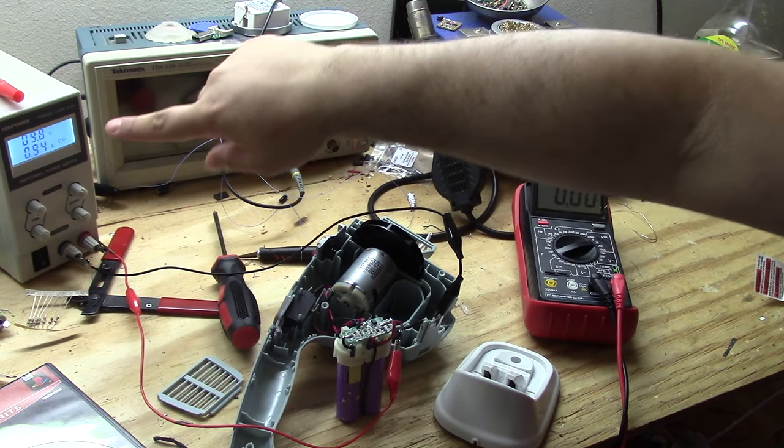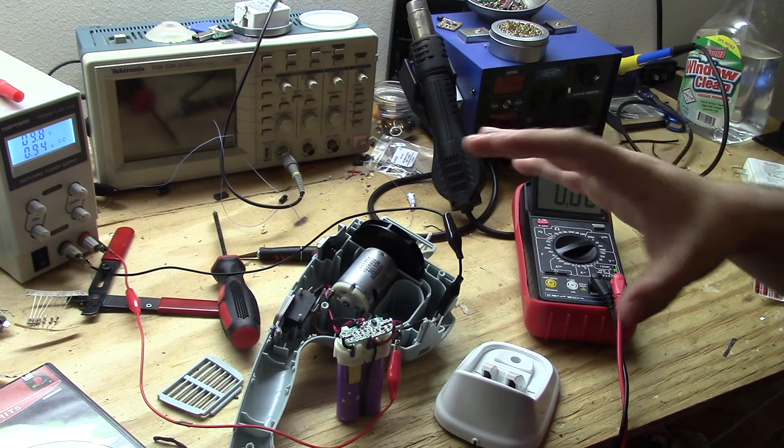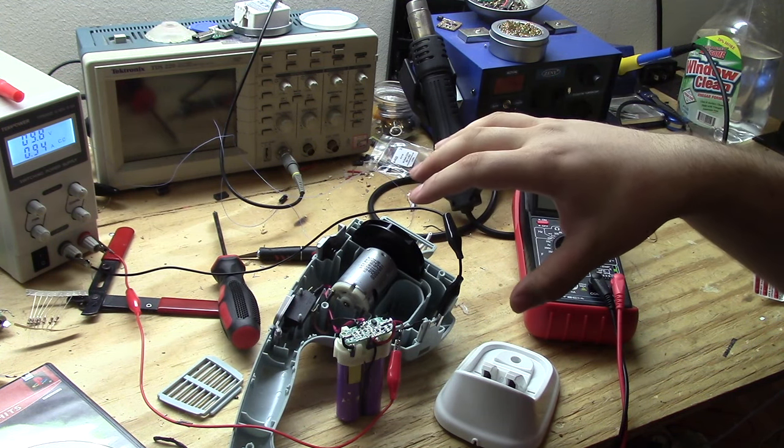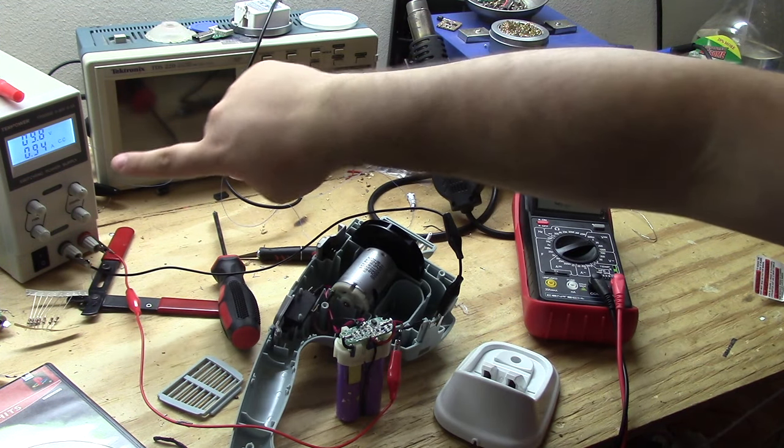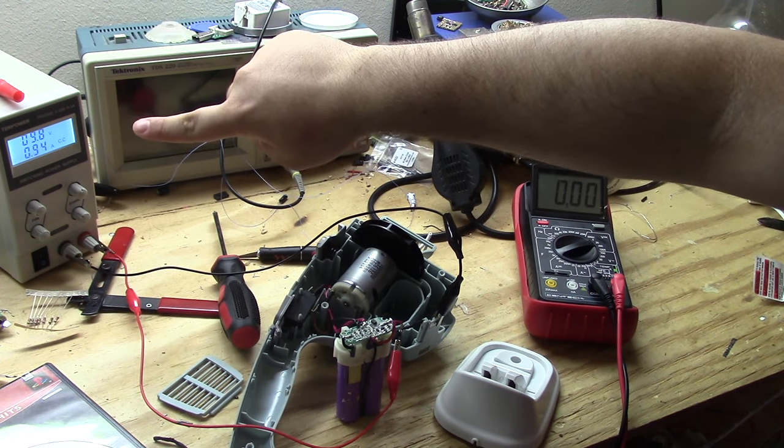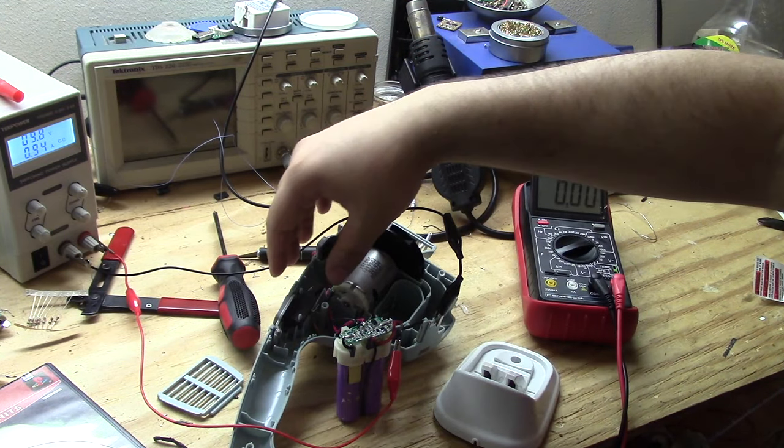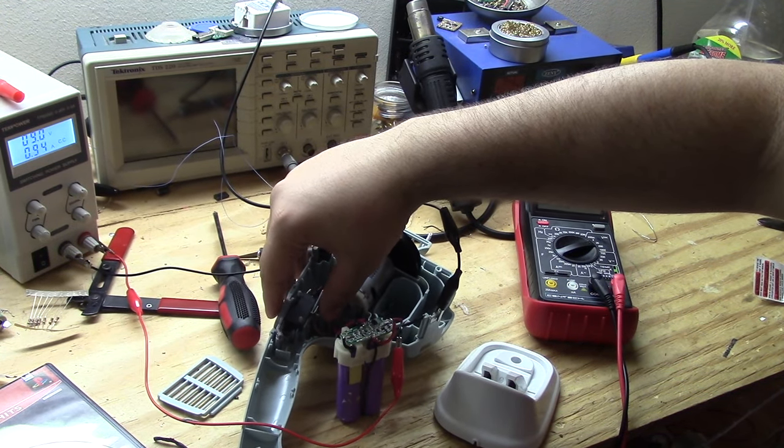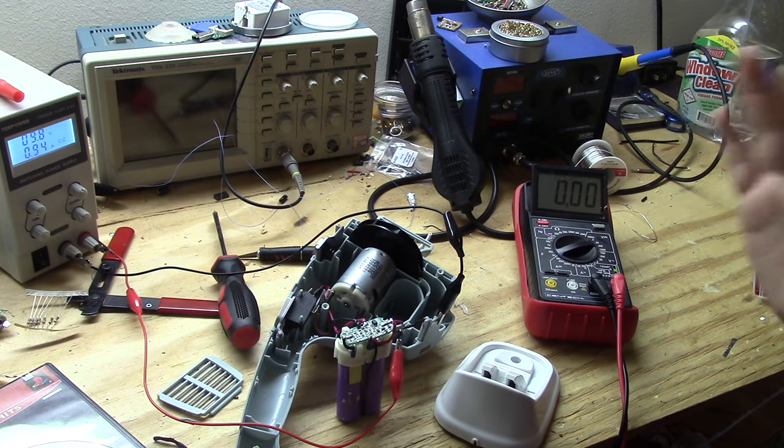So I got my lab bench power supply hooked up here and it is charging the battery successfully, which is really odd because I thought the problem was within this unit. Turns out it's not though, because if there was, this wouldn't be working right now. It's drawing just under one amp at 9.8 volts of direct current. And to prove that it's working, we'll just push this button and you can hear it. That sounds how it should sound. It sounds perfect.